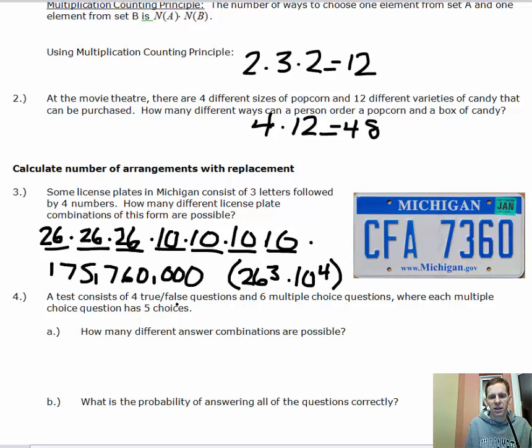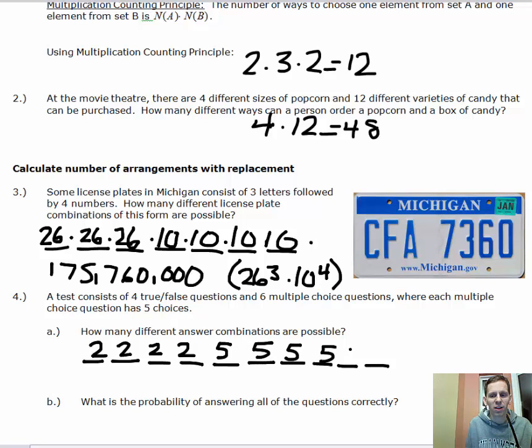For number four, a test consists of four true-false questions and six multiple-choice questions, where each multiple-choice question has five choices. To find out how many different answer combinations are possible, let's start with the four true and false questions: one, two, three, four. There are two choices for the first question, it's either true or false. The second question has two choices, true or false. The third question has two choices. Question four has two choices. The next six questions are multiple-choice, where each question has five choices. So for the first multiple-choice question, you have five choices: A, B, C, D, or E. The same thing for the second, and the third, and the fourth, and the fifth, and the sixth. All of these questions each have five choices. You can repeat the same letter.